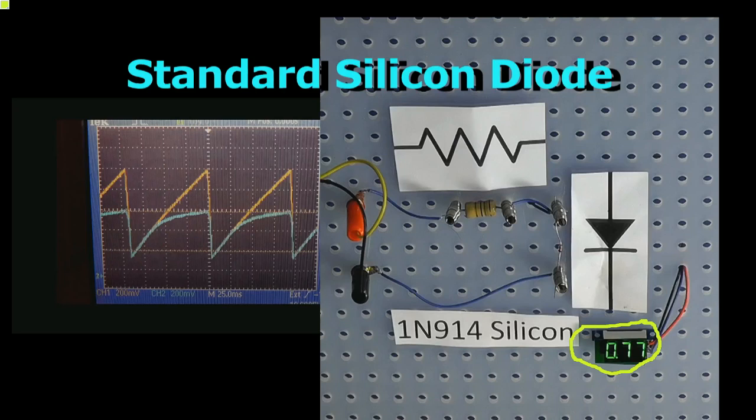Now we say 0.6 a lot, but the reality is it can wander around 0.6 up to 0.8, and different members of the family can have different attributes, as we'll see. I'm going to show some other diodes here in a bit.